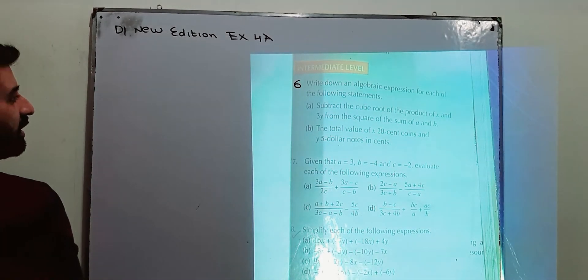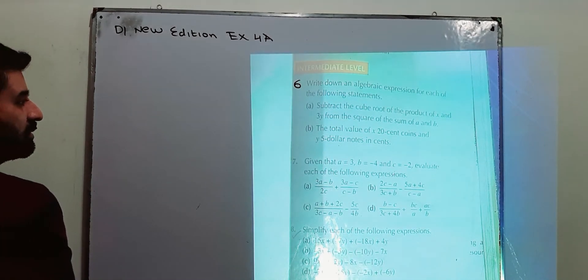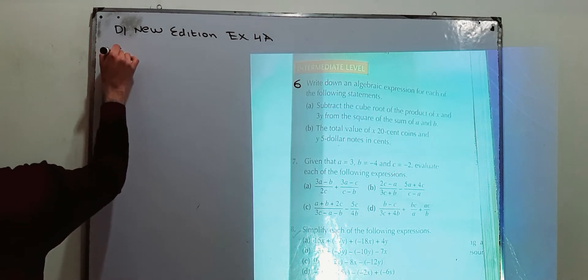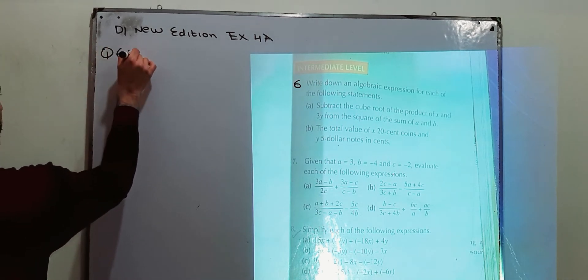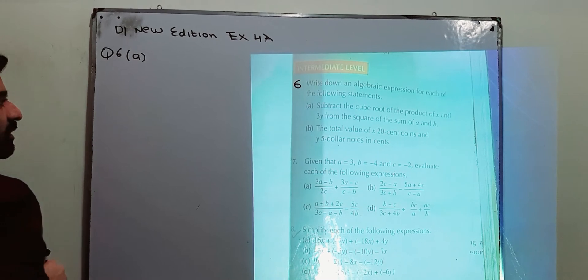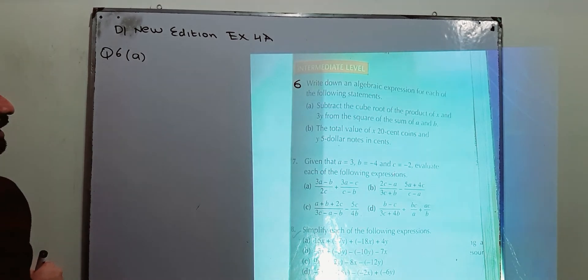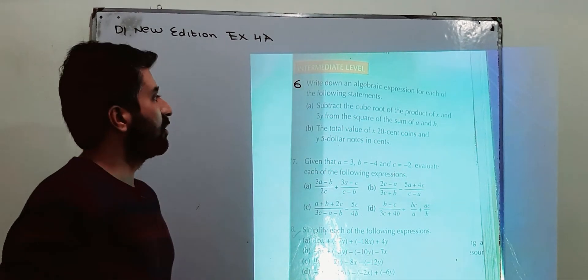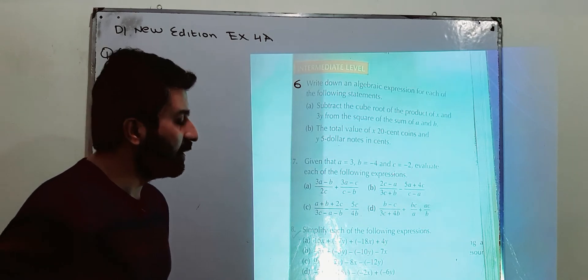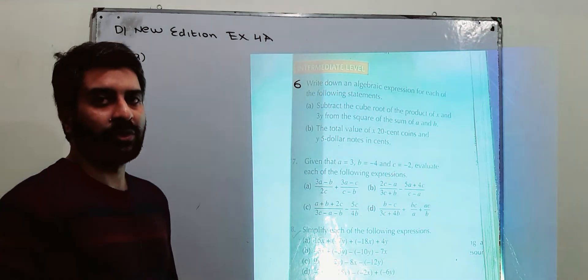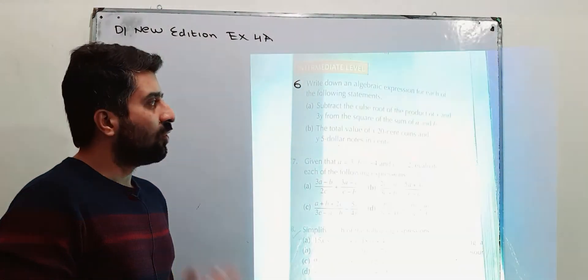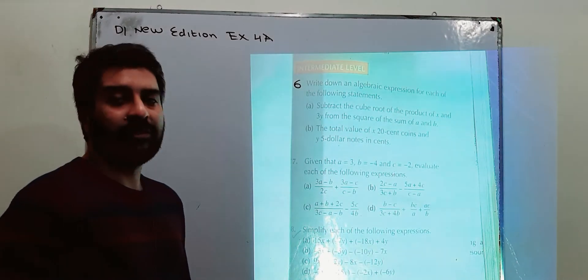Write down an algebraic expression for each of the following statements. Question number 6, part A. We have to write an algebraic expression for part A and part B. An algebraic expression involves algebraic terms with mathematical operations in between them.